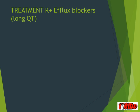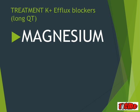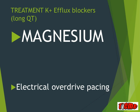To treat long QT from potassium efflux blockers, the most important drug by far is magnesium, which helps stabilize the membrane. If magnesium does not work for torsades, you should try electrical overdrive pacing.